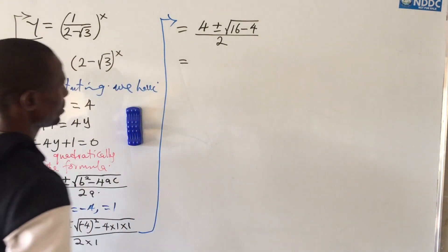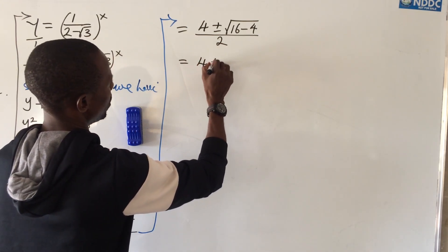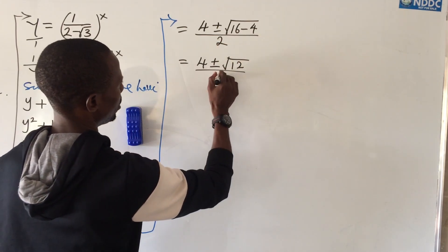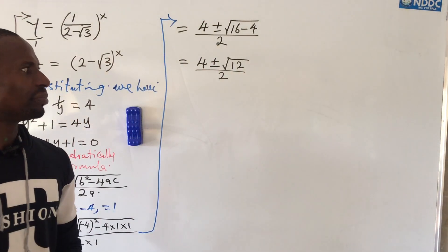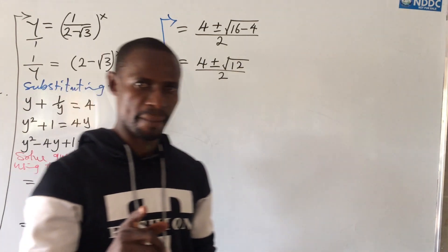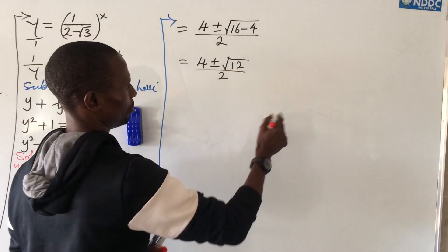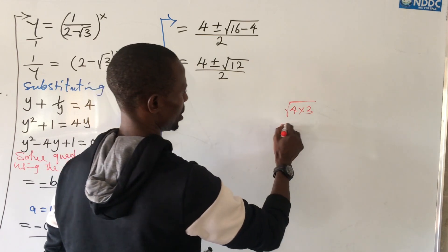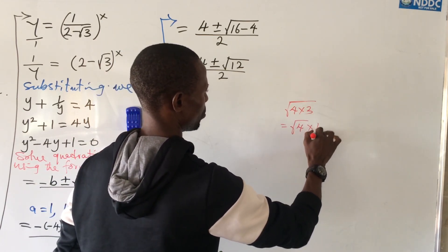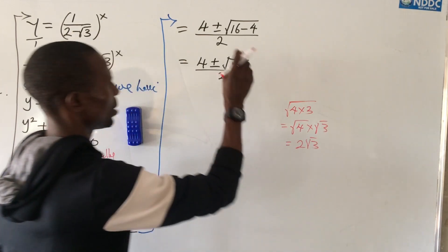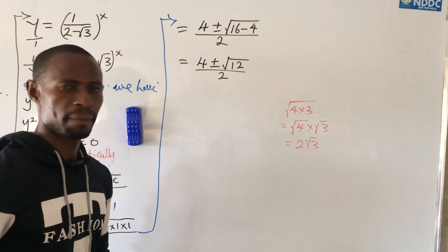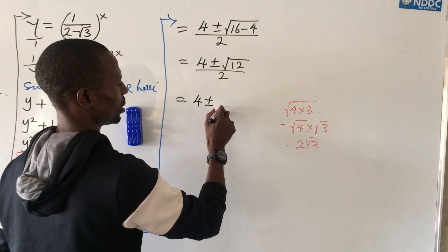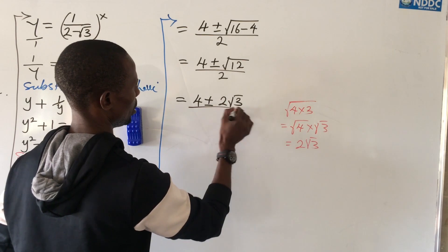This automatically gives us 4, plus or minus the square root of 12, all over 2. Now, 12 is not a perfect square, but 12 can be expressed as √4 times 3, which is √4 times √3, which equals 2√3. So √12 can be expressed as 2√3. Putting this in, we get 4 plus or minus 2√3, all over 2.